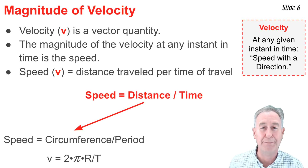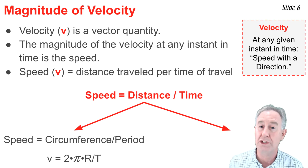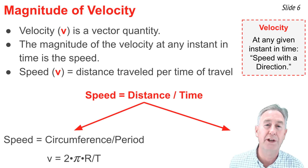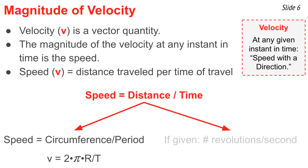Oftentimes we know the number of revolutions an object makes per second. For instance, that lab stopper might make 5 revolutions per second. To calculate the speed, we calculate the distance per time ratio. If it makes 5 revolutions in 1 second, then the distance is 5 circumferences in 1 second — so speed equals 5 times 2 times pi times r, divided by 1 second.